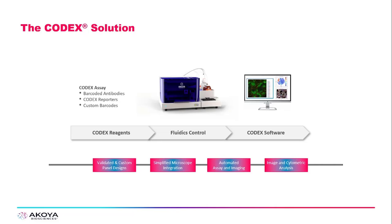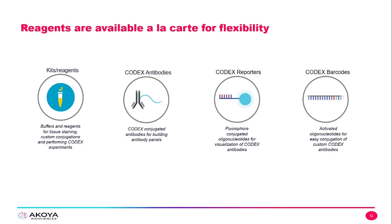The CODEX solution is comprised of three main components: CODEX reagents, fluidics control, and CODEX software. Our reagents are available à la carte for flexibility and include kits and reagents — essentially all the buffers and reagents you need for tissue staining, custom conjugations, and performing CODEX experiments. The CODEX antibodies are conjugated antibodies for building antibody panels. The CODEX reporters are fluorophore-conjugated oligos for visualization of the CODEX antibodies. The CODEX barcodes are activated oligos for easy conjugation of custom CODEX antibodies.